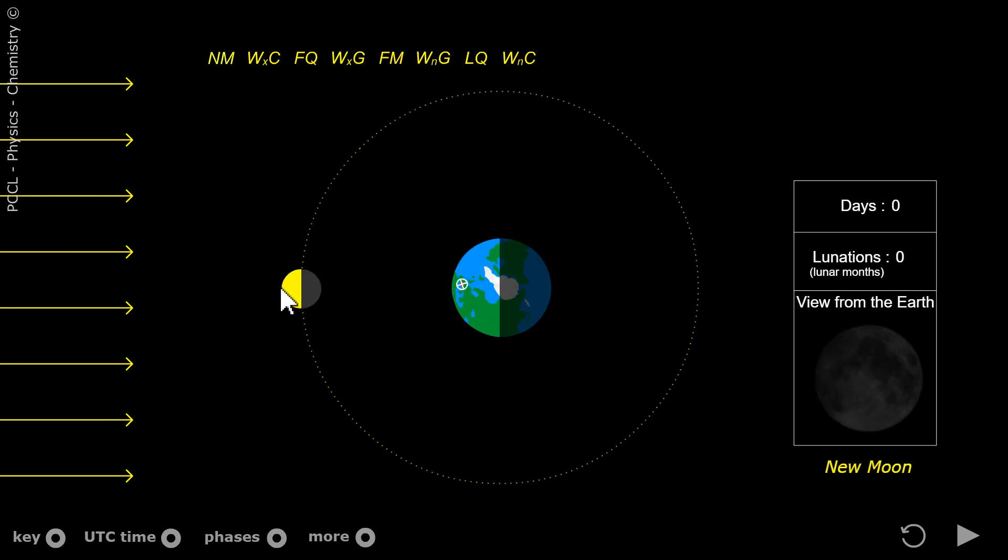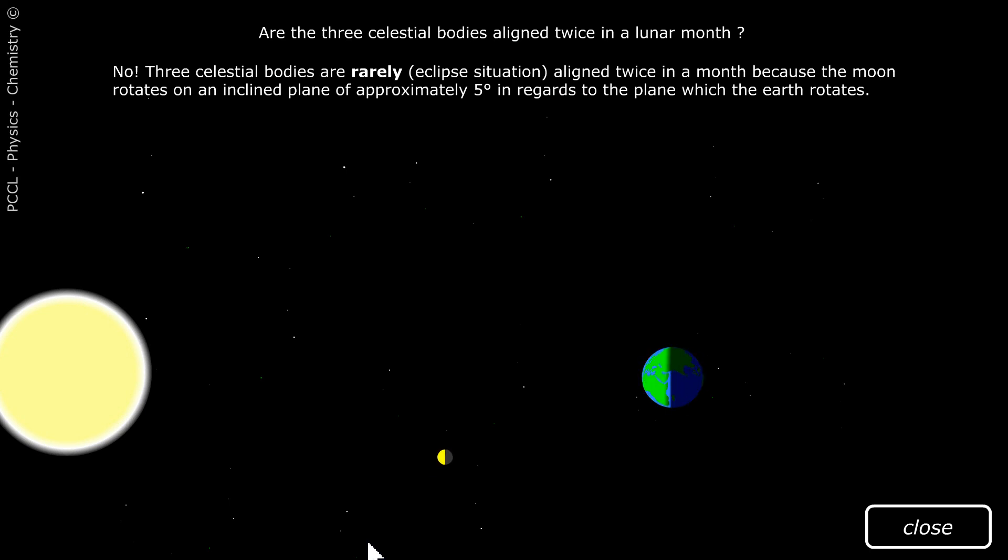We can ask ourselves the question of whether, when the moon is in this position, is it not hiding the sun? The answer is no. It can happen, it's called a solar eclipse. It can happen, but the three stars - sun, earth, and moon - must be aligned.